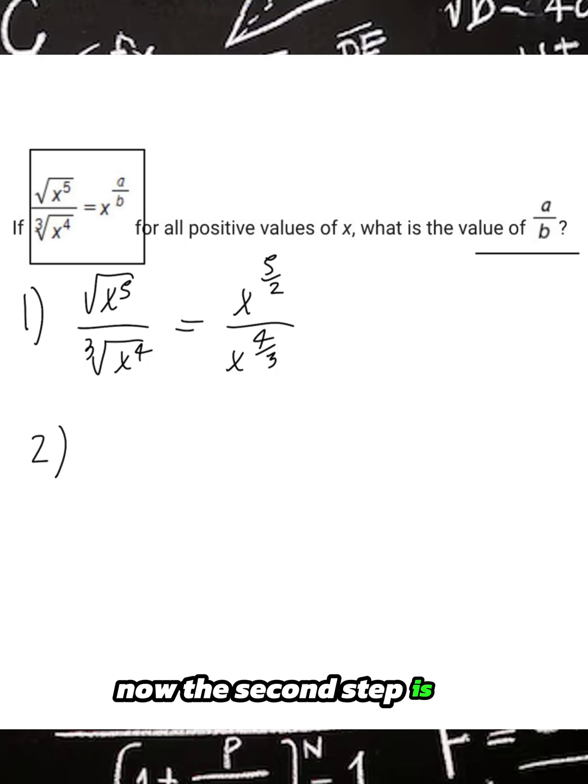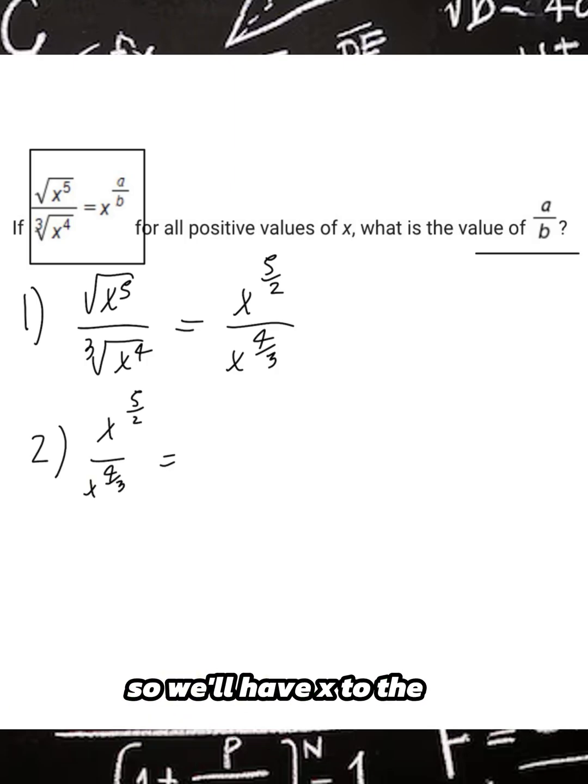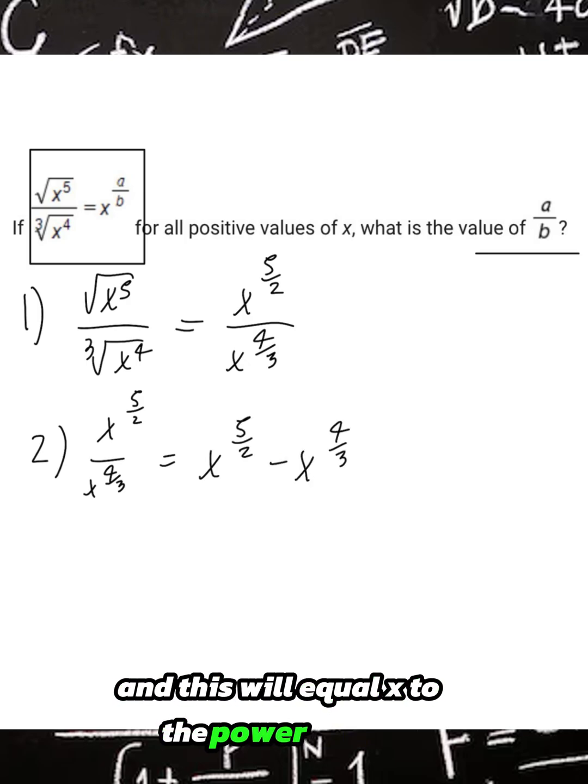Now the second step is dividing, which is the same as subtracting the exponents. So we'll have x to the power of 5 over 2 minus x to the power of 4 over 3, and this will equal x to the power of a over b, which is what we're trying to find.